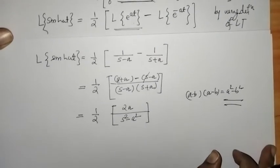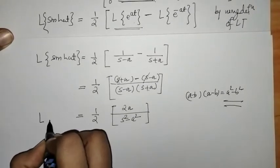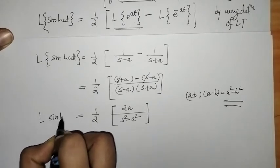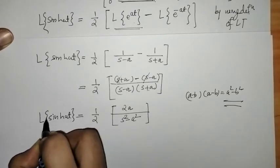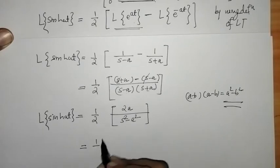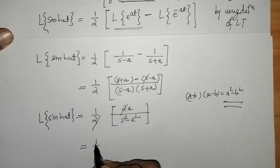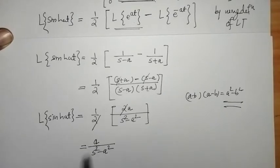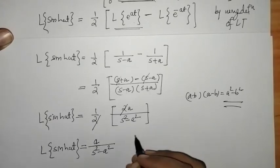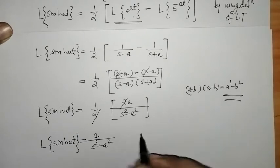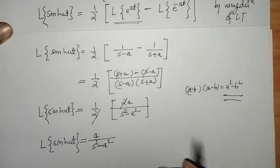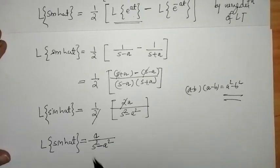So what we got is the Laplace of sinh(at). When we simplify, the 2 from the numerator and the 1/2 factor cancel, and we get a upon s squared minus a squared. This is the Laplace of sinh(at), equal to a upon s squared minus a squared, where a is a constant.